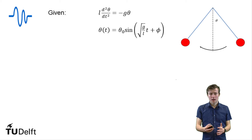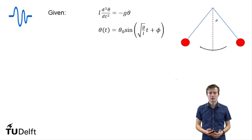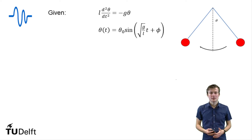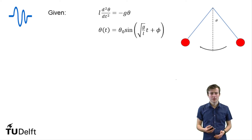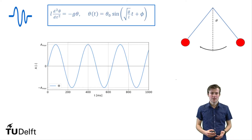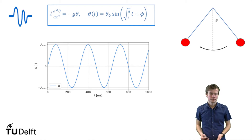We can work out that theta should then be a sinusoidal function, with the amplitude theta zero, and the argument is the square root of g over l times t plus phi. If we plot it against time, we can see it's a nice sinusoidal shape which oscillates over time.